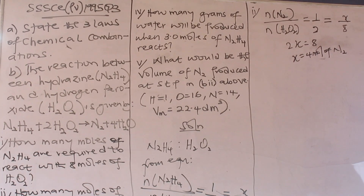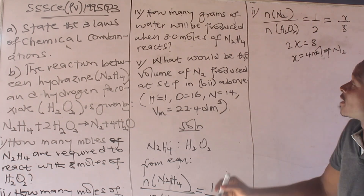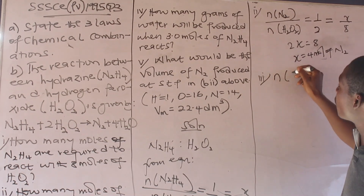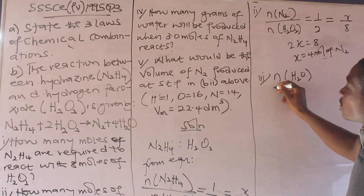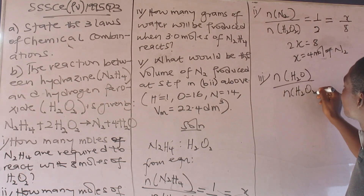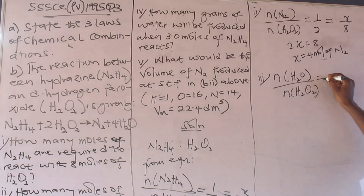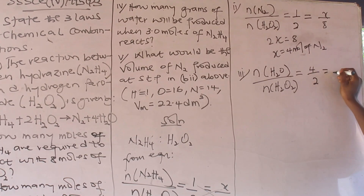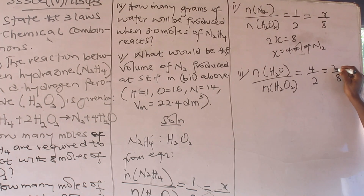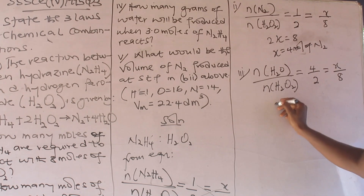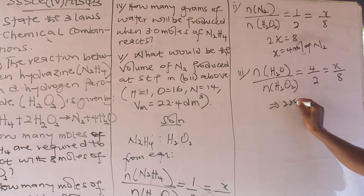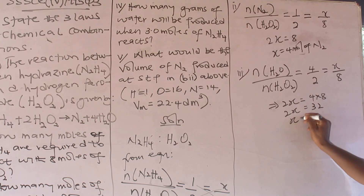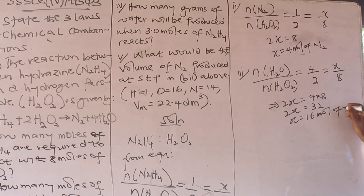How many moles of water would be produced from 8 moles of peroxide? We compare the mole ratio of water to peroxide. From the equation, water is 4 and peroxide is 2. From the information given, peroxide is 8 and water is X. So: 4 over 2 equals X over 8, giving us 2X = 32, therefore X = 16 moles of water.